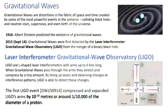By the way, these arms are four kilometers each. We need them to be a large distance because when gravitational waves hit the Earth, they only change the diameter of the Earth by the width of three atoms, which is very difficult to measure — and even less over just four kilometers.